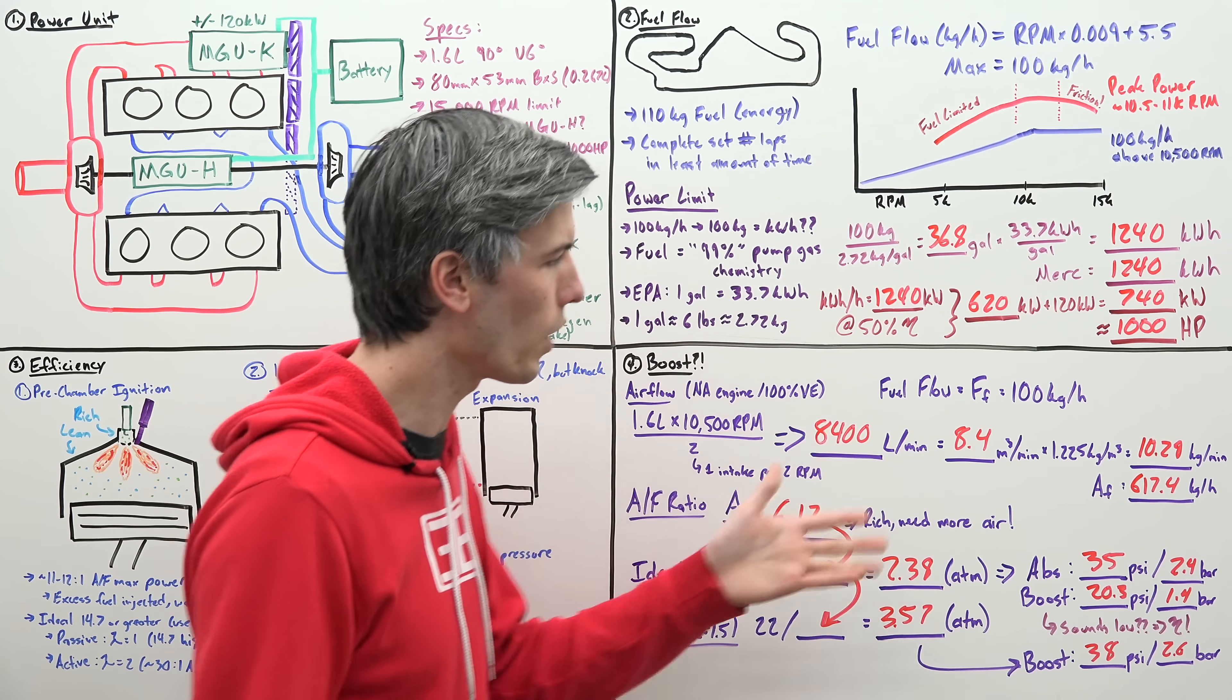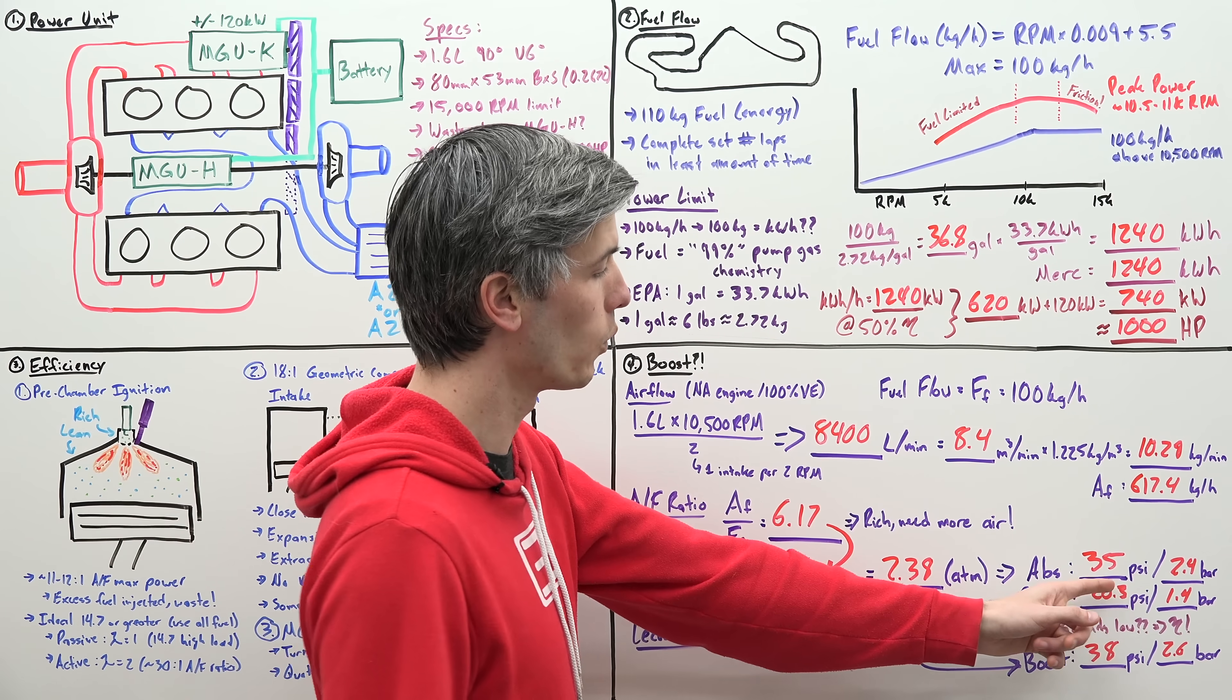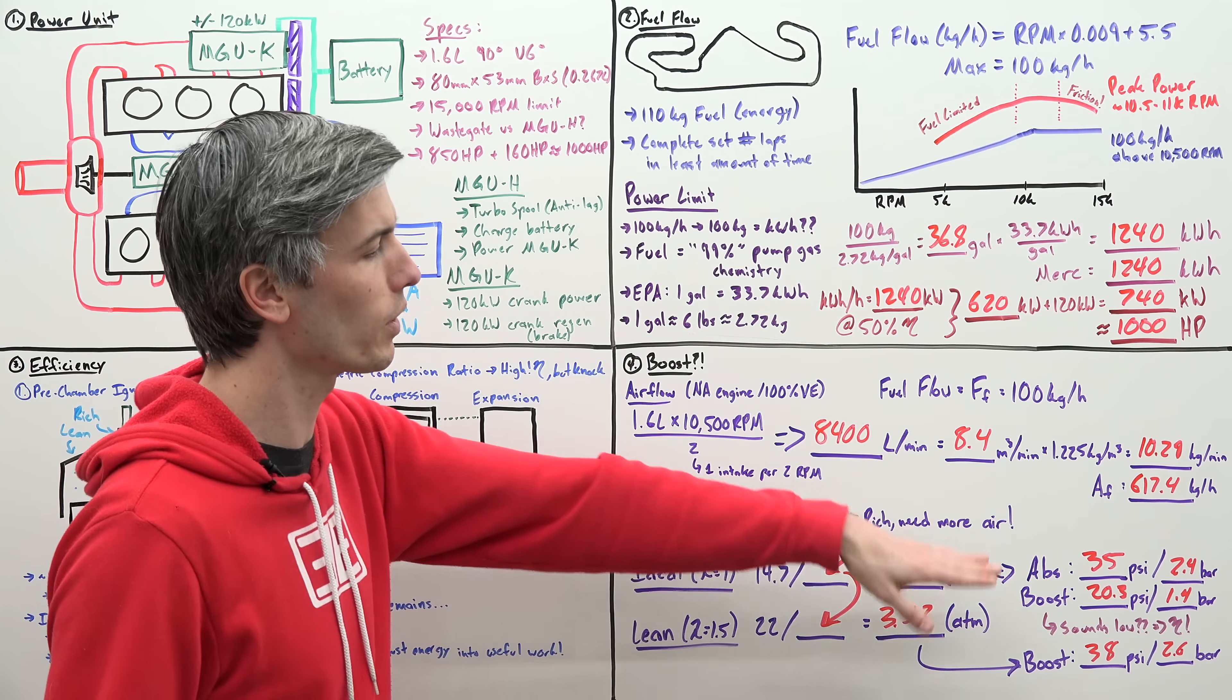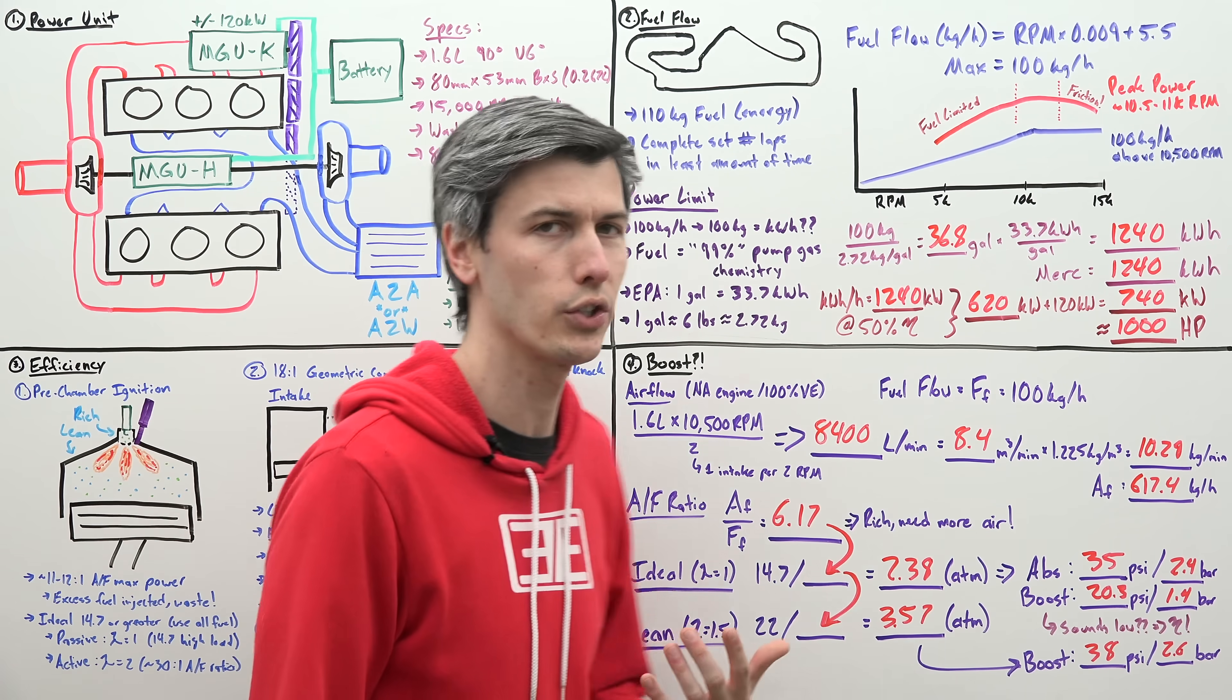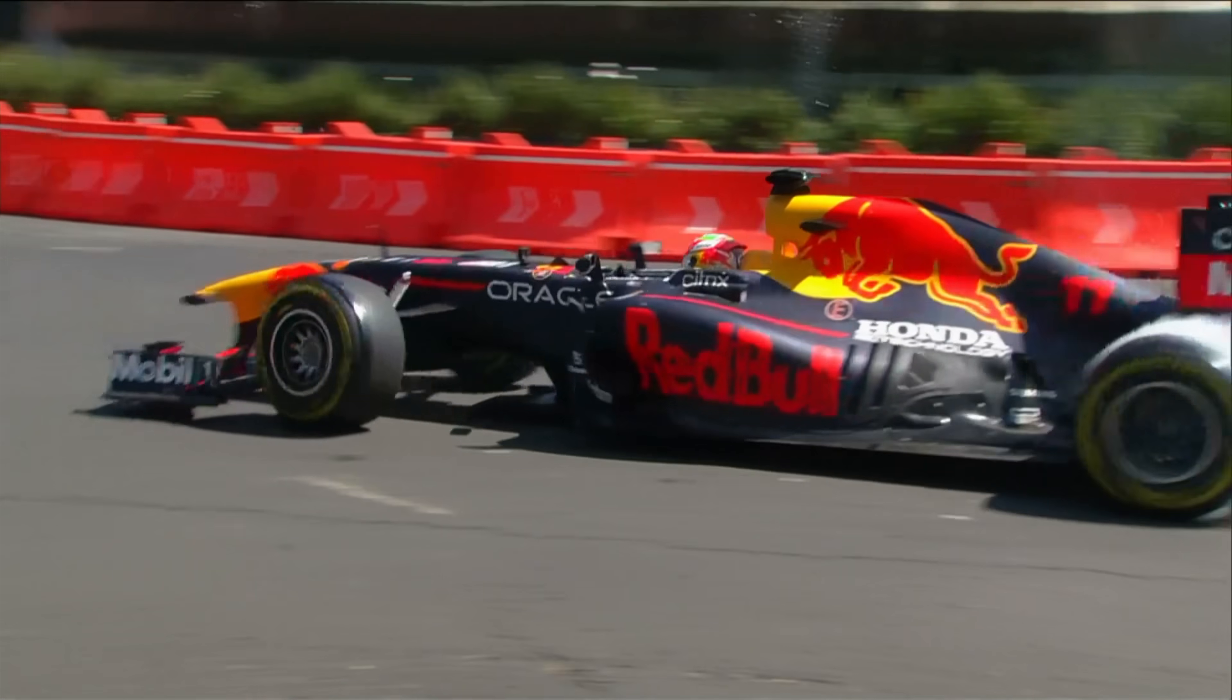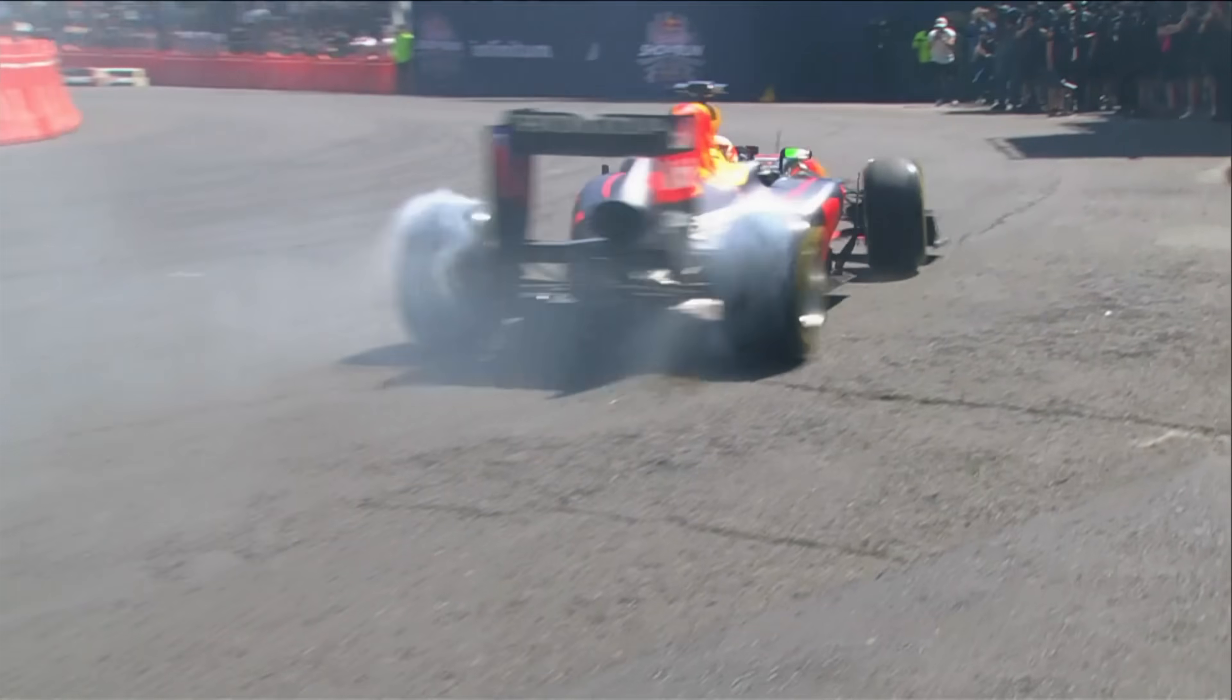Now, one final comment on what this boost pressure might be. Again, I don't know what it is, but my best guess would be between these numbers right here based on what air fuel ratio it's using. But one thing you need to keep in mind is this is going to change depending on the circuit. So, if you're at a really high elevation circuit like Mexico City, well then you're going to have a higher boost pressure because the air is thinner. So, you're going to use the turbocharger to compensate for that low atmospheric pressure base that you're starting at.